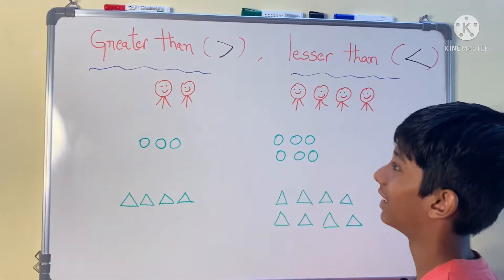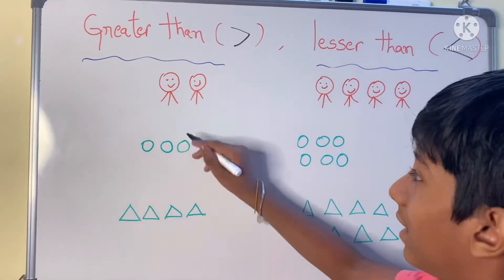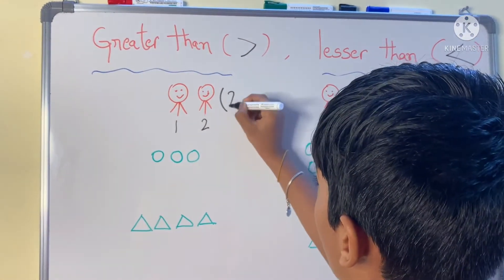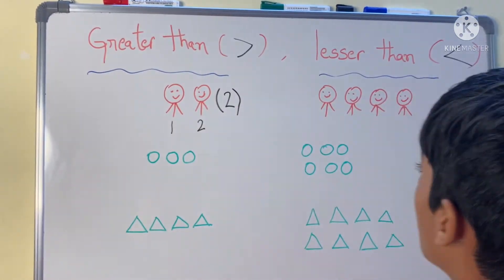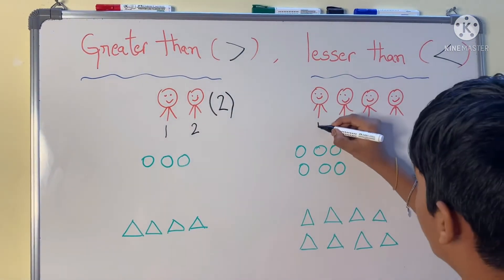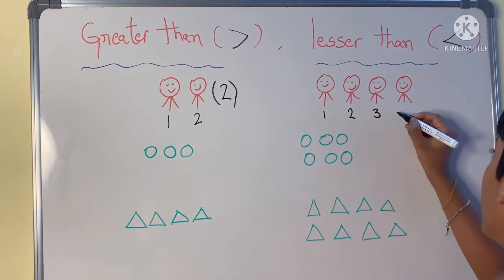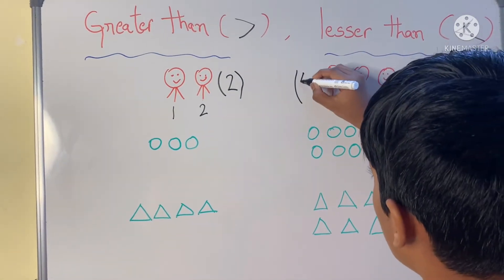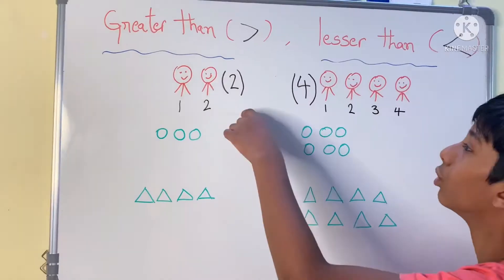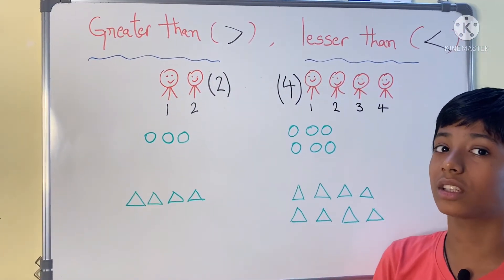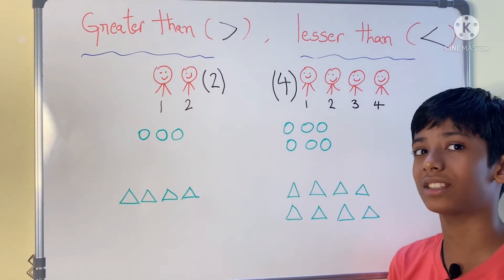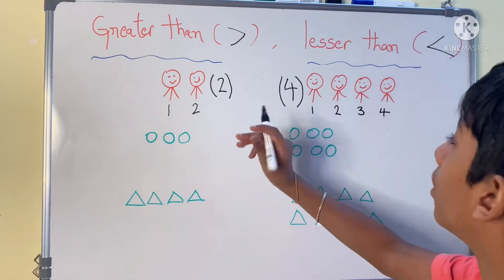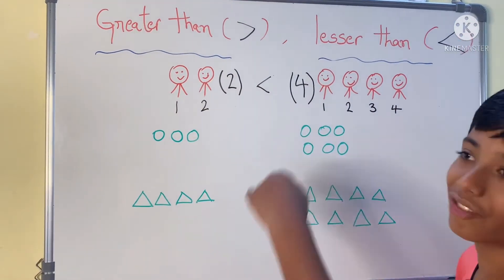Now friends, let us solve this. How many people are there? There are 2 people. How many people are there in the next group? 1, 2, 3, 4 — there are 4 people. Can you tell me the relation? Is it greater than or lesser than? So 2 is lesser than 4.